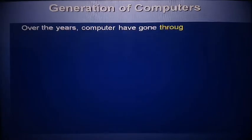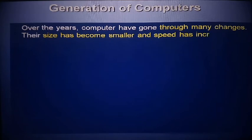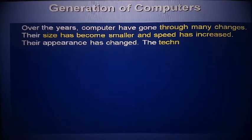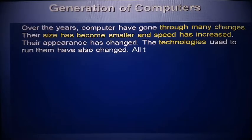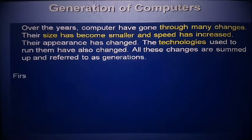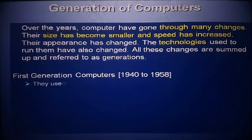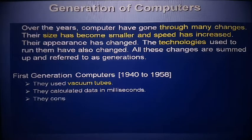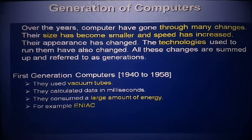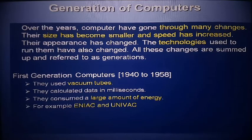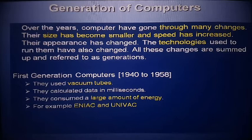First of all, I will explain the generation of a computer. Over the years, computers have gone through many changes — from old ones to present times. Changes include smaller size, increased speed, changed appearance, and changed technology used to run them. All these changes are referred to as generations. From large sizes previously to smaller devices like smartphones today.